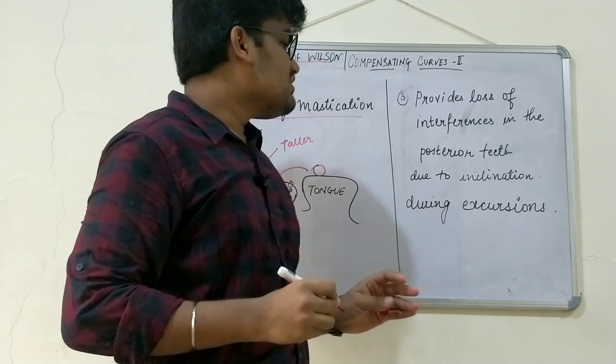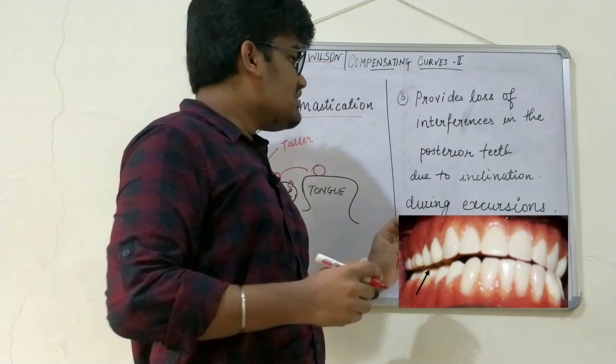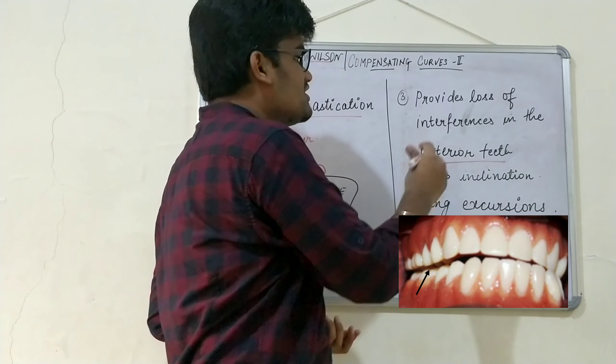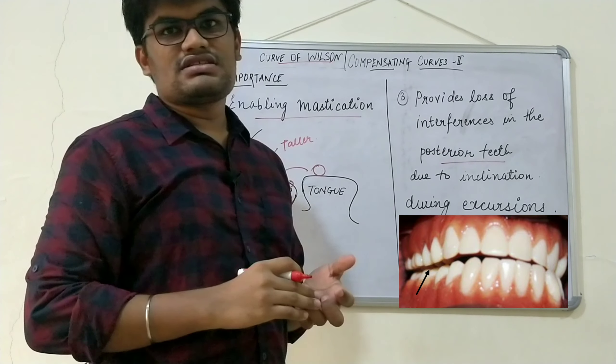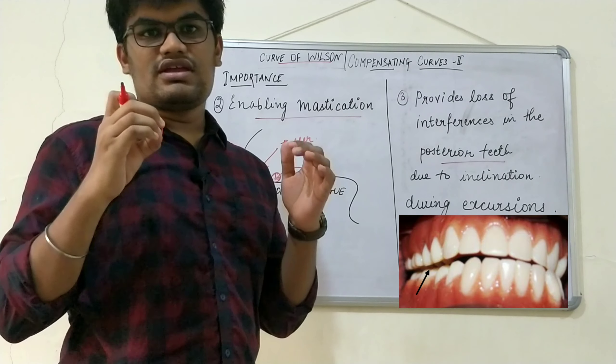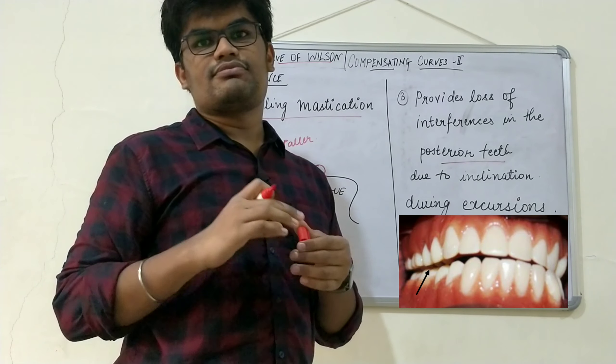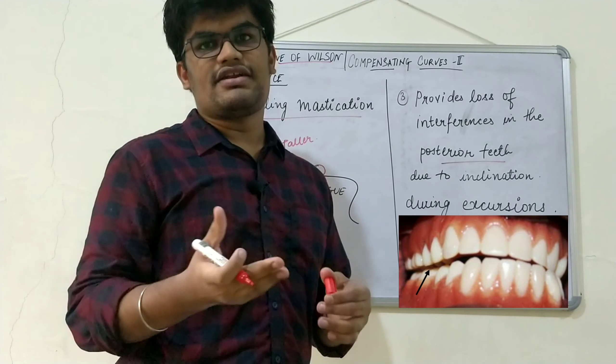Turning on to the third function. The inclination of the posterior teeth always prevents any type of interferences in the posterior teeth during any type of excursion—that is, protrusive excursion or lateral excursion.